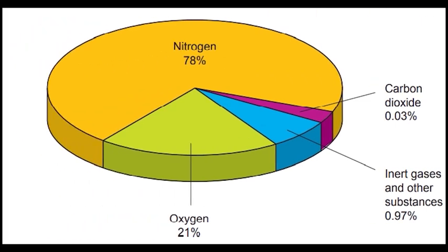Nitrogen makes up the highest percentage of air. Nitrogen makes up about 78% of air. Inert gases collectively make up around 0.97% of air. Carbon dioxide makes up the lowest percentage of air. It makes up about 0.03% of air.